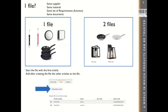One frequently asked question is: does every article have its own technical file? No. If you can group articles — if they have the same supplier, same material, and same requirement list — so they have the same function and you collect the same documents, you can group them. For example, a deviation of color, deviation of shape, or size difference can all be grouped into one technical file.